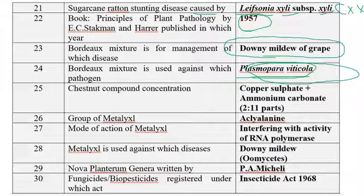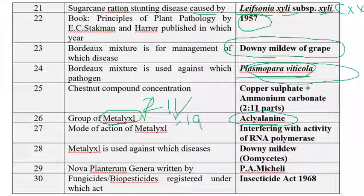The composition of Chestnut compound is 2:11 — two parts of copper sulfate and 11 parts of ammonium carbonate. The group of metalaxyl: trade name is Apron or Subdue. Metalaxyl is a fungicide especially recommended against Oomycota group of fungi, released in 1977. The mode of action of metalaxyl is that it interferes with the activity of RNA polymerase.